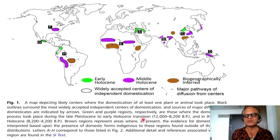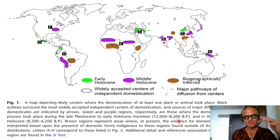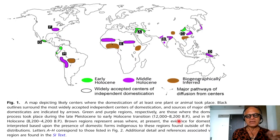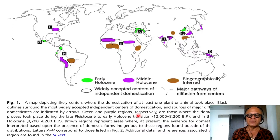Green and purple regions are those where the domestication process took place during the late Pleistocene to early Holocene transition, 12,000 to 8,200 BP. So before the Younger Dryas, there may have already been attempted agricultural activities and domestication attempts, as we were coming out of the Pleistocene with warm periods like the Bølling–Allerød. In the middle Holocene, 8,200 to 4,200 BP...